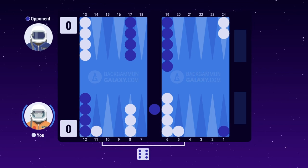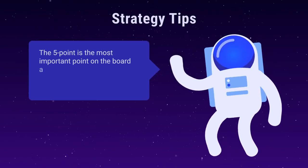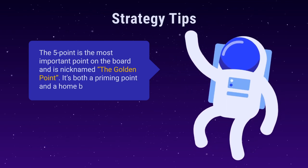This way, you can use your 6s next turn to hopefully make the 5 point if you don't get hit. The 5 point is the most important point on the board and it's nicknamed the golden point. It's both a priming point and a homeboard point.